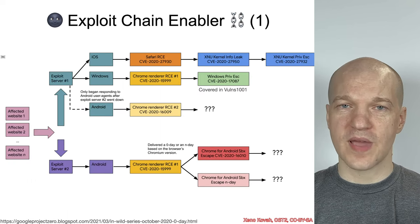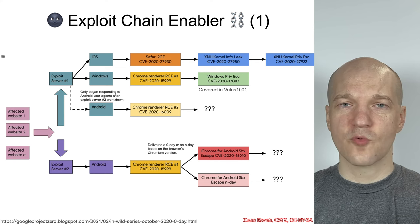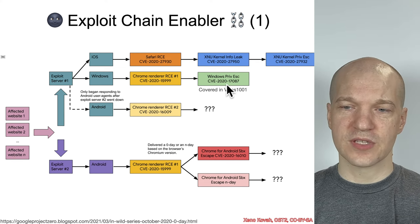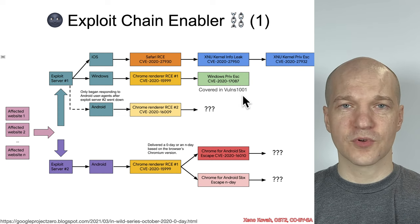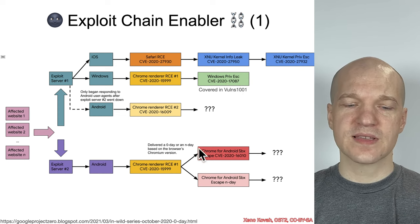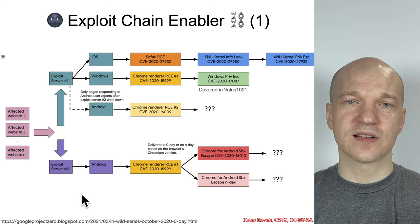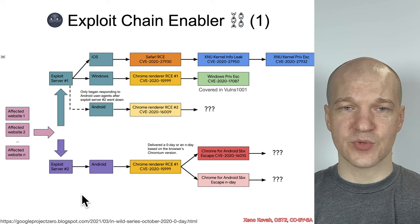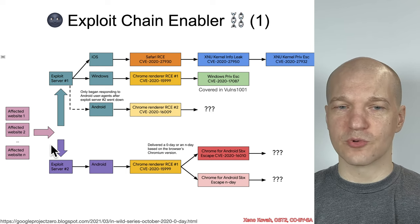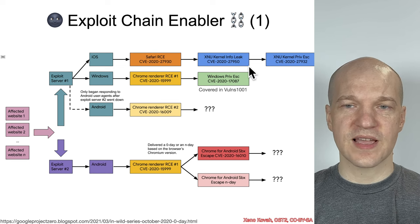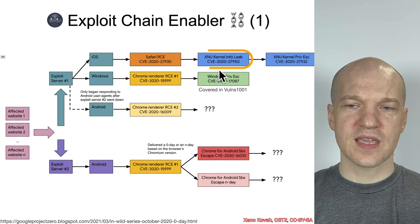Returning again to why they matter, let's talk about the exploit enabler. We had seen in a past example — CVE 2020-17087, covered in Vulnerabilities 1001 — a diagram from a Google Project Zero blog post that talked about how the attacker achieved their goals via exploit chains. They would infect a website, people would go to the website, they would break into the browser — whether Safari or Google Chrome — and then depending on whether they land on iOS versus Windows, they would have different privilege escalation vulnerabilities.